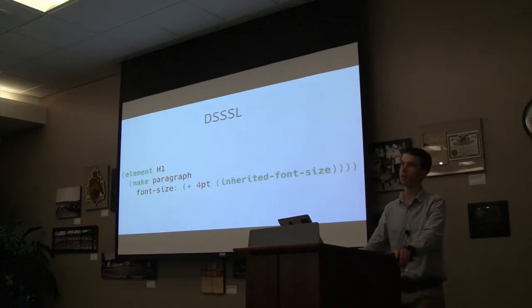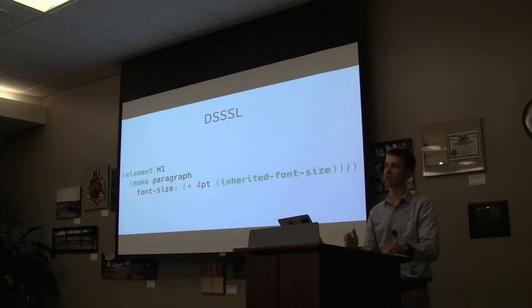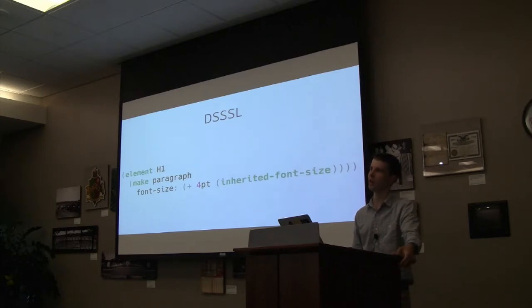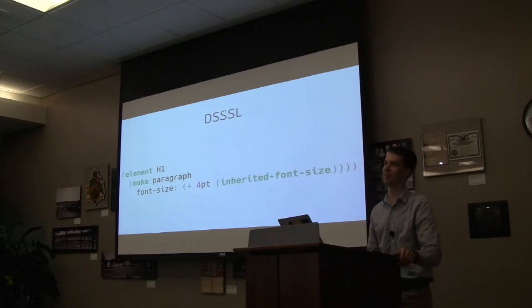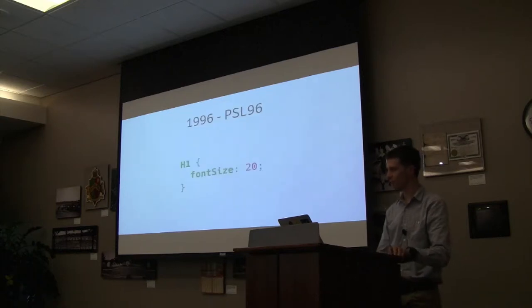The working group that ended up standardizing on DSSSL went on to create XSL and XSLT — which, for anyone who's been in the Java or XML world, is just as complicated, except it uses angle brackets instead of parentheses. And that died out too.